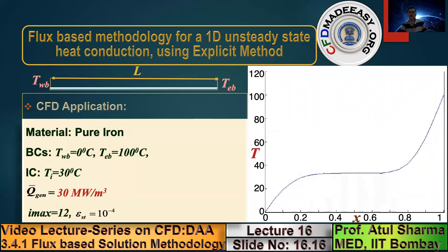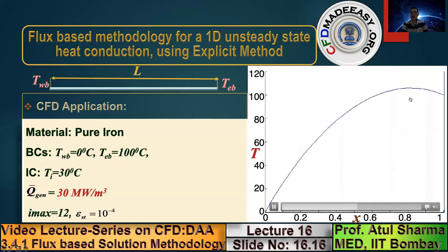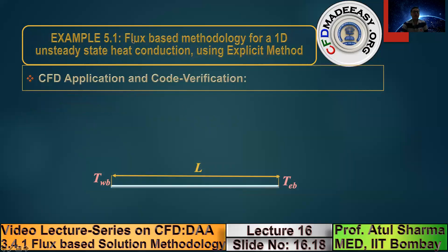With heat generation, although the limiting boundary values are 0 and 100, the heat generation leads to a local maximum, and the steady-state maximum temperature can be greater than the maximum boundary temperature of 100°C. This example problem corresponds to example 5.1 in Chapter 5 of the companion textbook, which also presents the computer program corresponding to this problem using the flux-based methodology for 1D unsteady heat conduction using the explicit method. The objective is to present CFD development, application, and analysis, including code verification by comparing numerical results with analytical solutions.